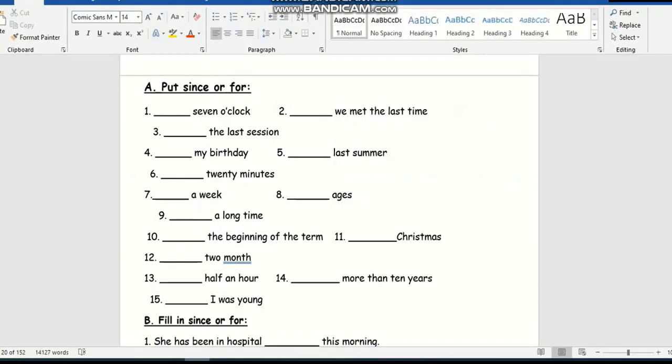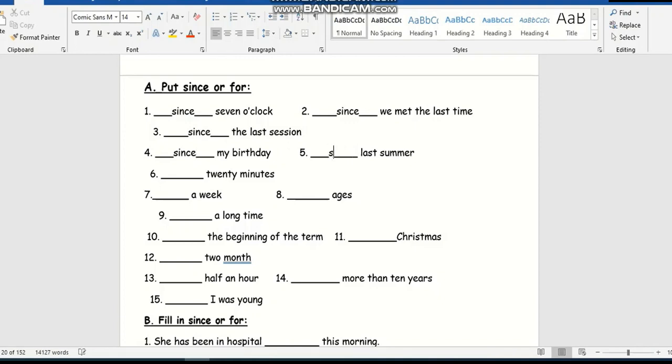Then we'll answer some exercises. Check understandings: for example here, since or for. In number one, seven o'clock - we're going to say since seven o'clock. Number two, we met the last time - since the last session. My birthday - since my birthday. Last summer - since last summer. But here, 20 minutes - we're going to say for 20 minutes. A week - for a week. Ages - for ages, and so on.